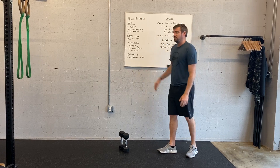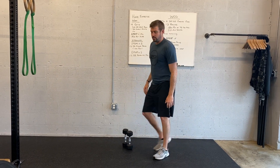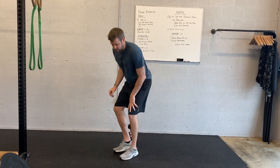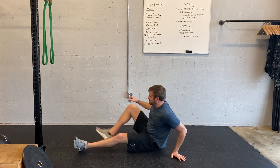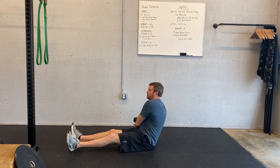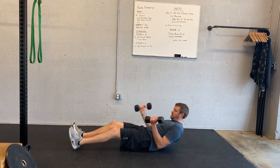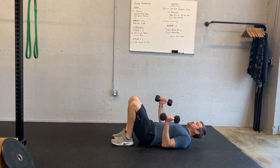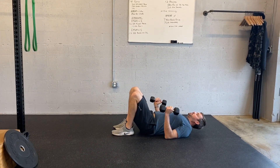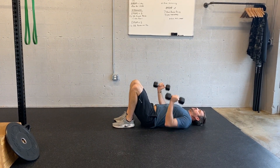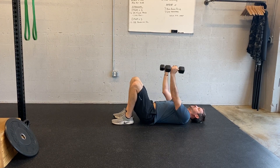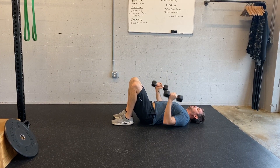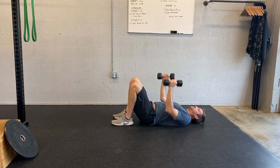The EMOM is 12 dumbbell floor presses and then 12 dumbbell Romanian deadlifts. For the floor press, you're aiming for elbows to ground, press up, down, up, down, up.